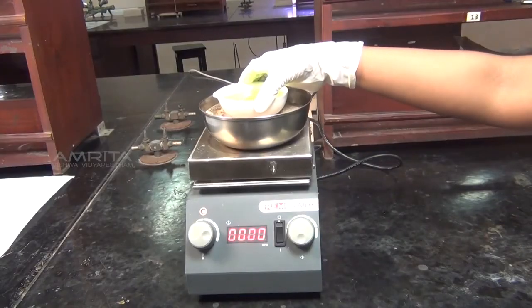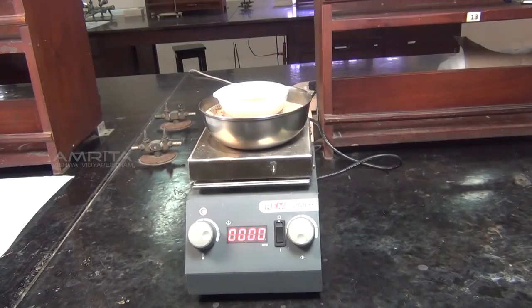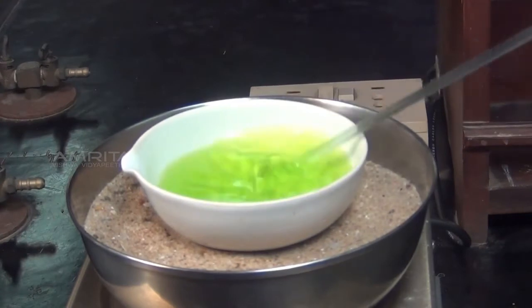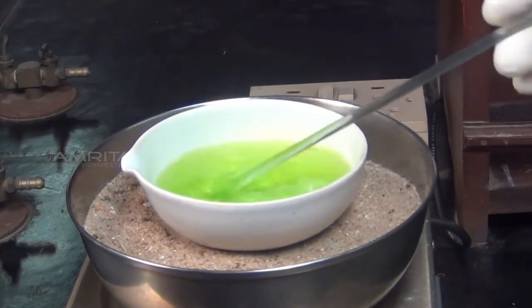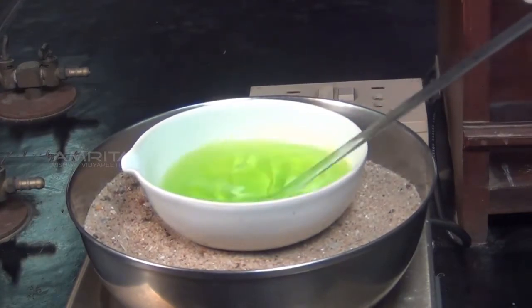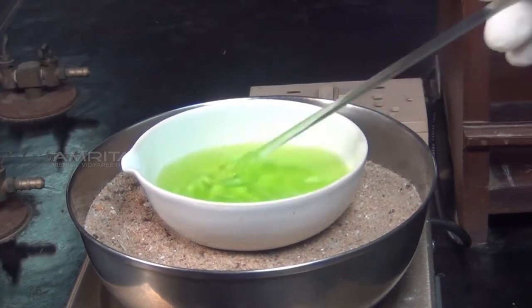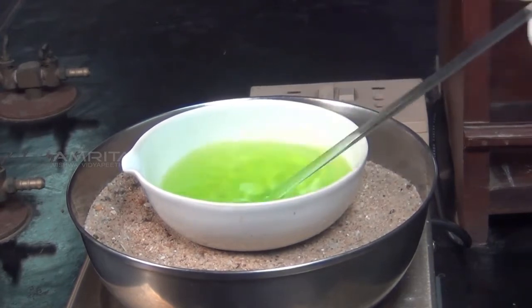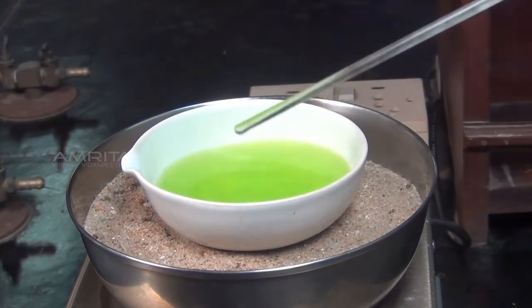Heat the solution in the china dish over the sand bath. To avoid crust formation on the side of the dish, stir the solution continuously with a glass rod. When the volume of the solution is reduced to about one half of its original volume, proceed to the next step.